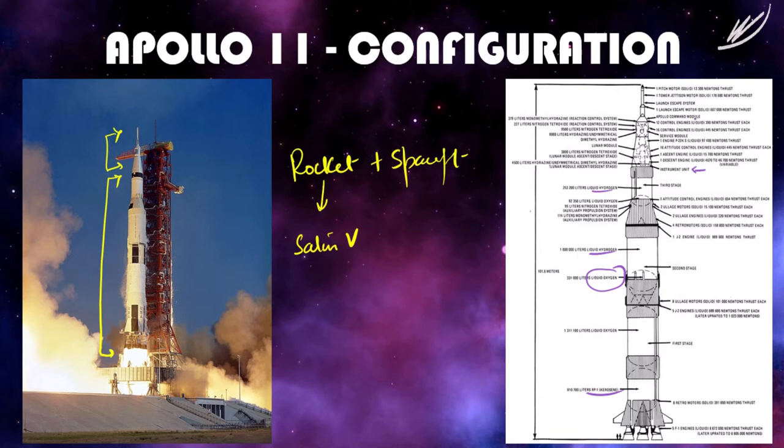Here is the Apollo command module. This is where all three astronauts used to sit and control the entire spacecraft. And this is the lunar module where two out of three astronauts will descend down when they are above the moon. This part is sent actually to the moon.